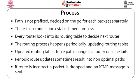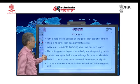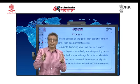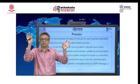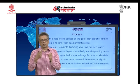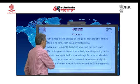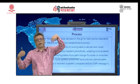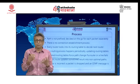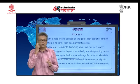The path is not prefixed — for every packet it is decided, and there is no connection establishment process. Every router looks into the routing table to decide the next router. There are two processes: routing and forwarding. Routing happens once in a while, where every router learns about every other router and the shortest path to every destination. Forwarding happens with every packet — the packet is forwarded to the next immediate router. Routing tables are not continuously updated; they are updated periodically. That is a very critical point.